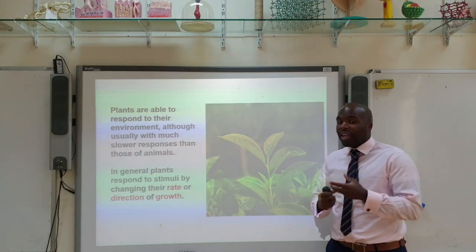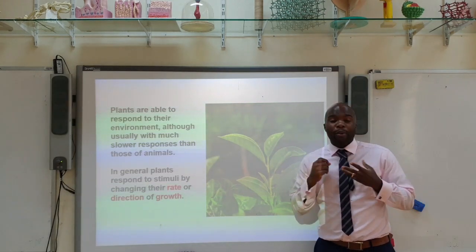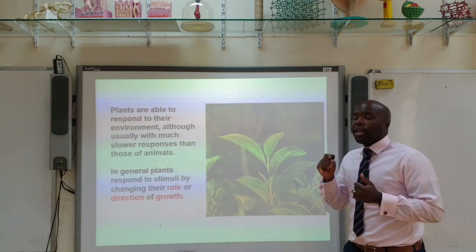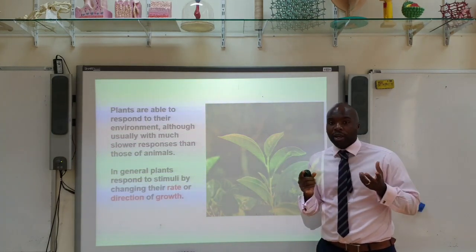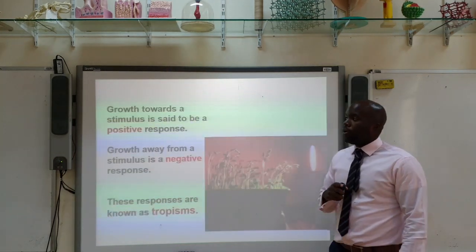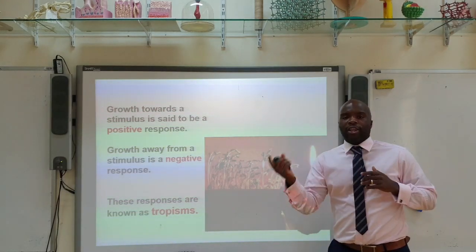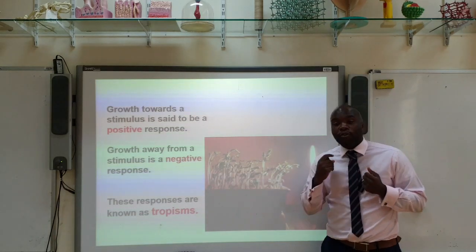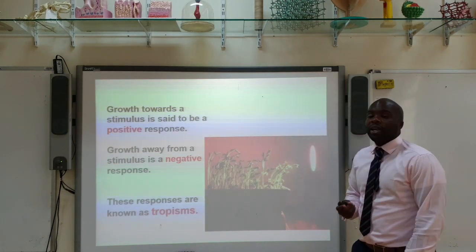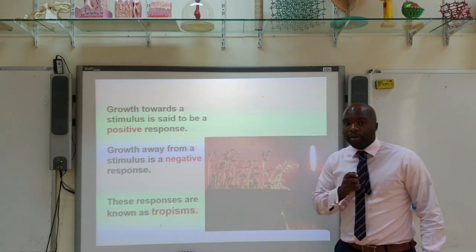Plants are able to respond to their environment — they can respond to stimuli just like animals. However, this response to stimuli is often slower than in animals. Plants respond to a stimulus by either changing their rate or direction of growth. Growth towards a stimulus is known as a positive response, and growth away from a stimulus is known as a negative response. These positive and negative responses are known as tropisms.